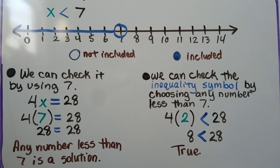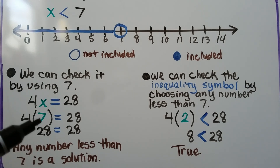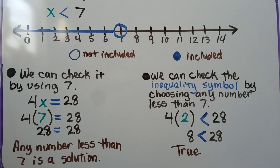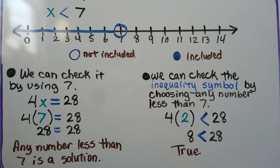We can check by substituting x equal to 7 with an equal sign: 4 times 7 is 28, so 28 equals 28 — that's true. So any number less than 7 is a solution. We can also check the inequality symbol by using any number less than 7, like x equals 2: 4 times 2 is 8, and 8 is less than 28 — that's true. So we know we've got the correct inequality symbol.